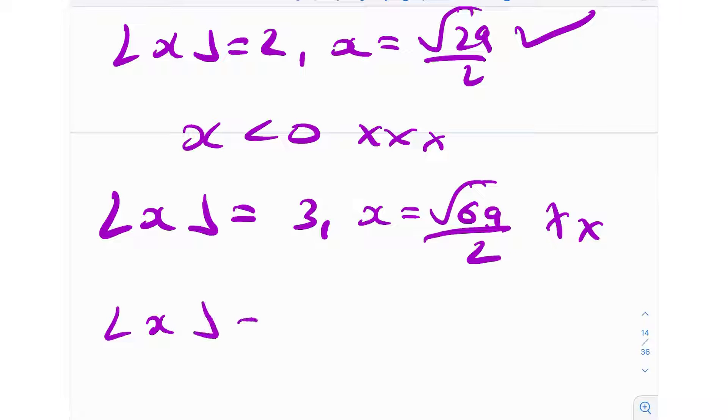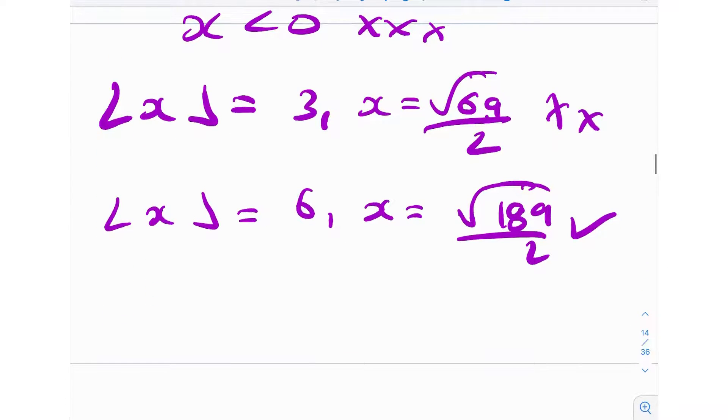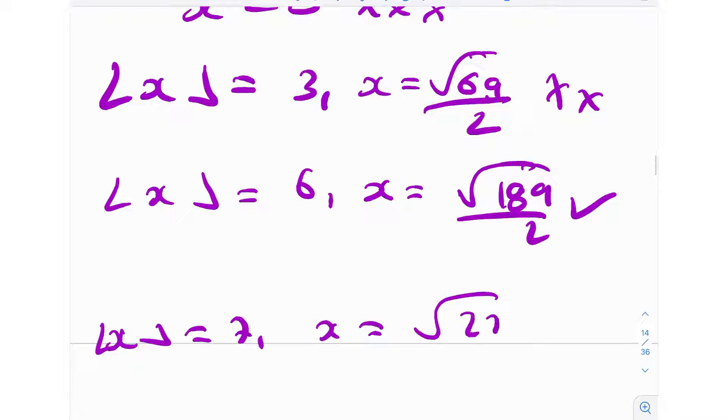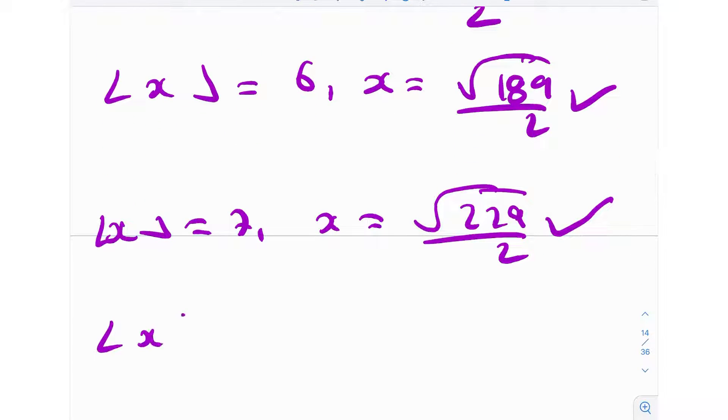Next, if you move on to the greatest integer function of x being 6, you get x = √189/2, which is a valid solution. Then you move on to the greatest integer of x is 7. You'll get x = √229/2, which is again a valid solution. And lastly, we get floor of x equal to 8, which corresponds to x = √269/2, which is again a valid solution.